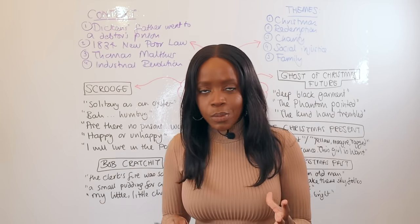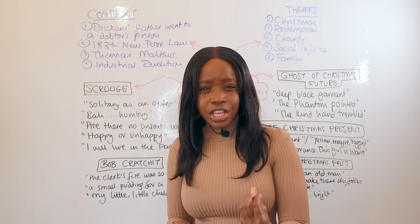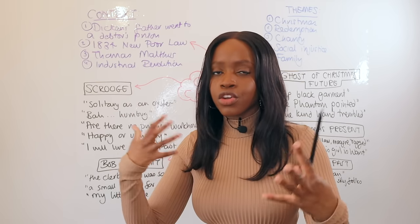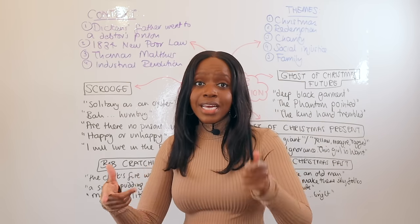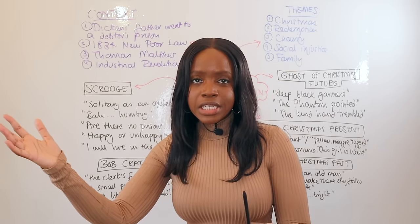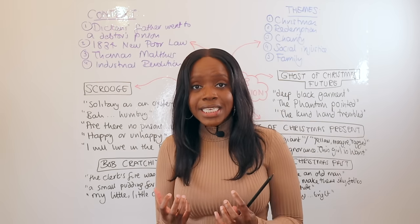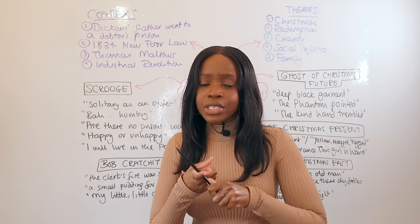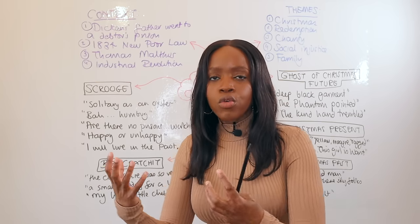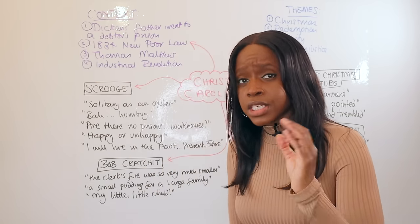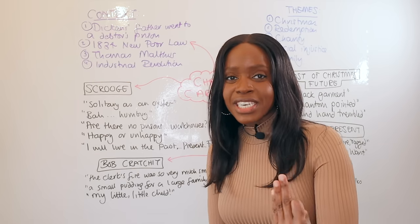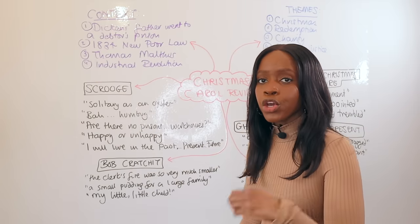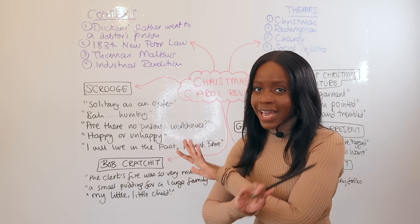The third context point involves Thomas Malthus, who argued that overpopulation was a cause of poverty in Victorian England, and that disease and pandemics were actually beneficial because they reduced the population. Dickens was very critical of this theory, seeing it as insensitive — almost saying the poor deserve to die — and as removing pressure from the government to help the poor. This is alluded to when Scrooge refers to the 'surplus population' and says they had 'better die and reduce the surplus population.'